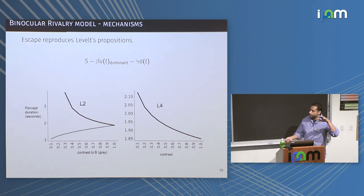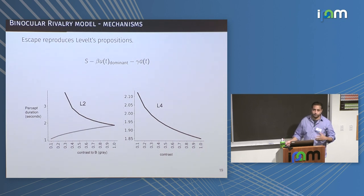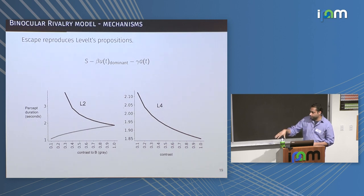If it were a release mechanism, changing the gray (suppressed) population wouldn't give any effect — you'd have to change the drive to the on population. The fact that changing the down population drives the effect is already telling you it's an escape mechanism.